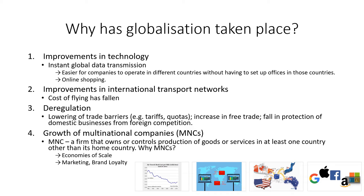And lastly, the growth of multinational companies. A multinational company — or MNC — is a firm that owns or controls production of goods and services in at least one country other than its home country. For example, if you have a firm based in America that owns production plants in Europe and Asia, that company is an MNC. MNCs are formed mainly due to two reasons: economies of scale is one of them. The cost benefits of growing a business globally and opening it up to foreign consumers allows MNCs to reduce their average cost of production and maximize profit.